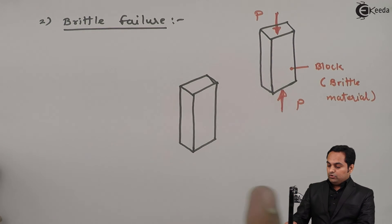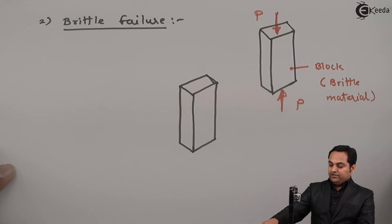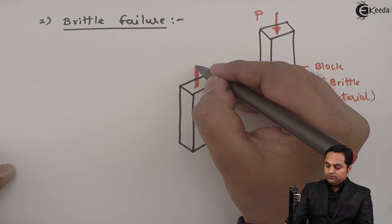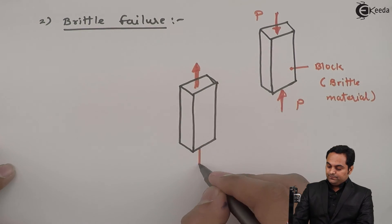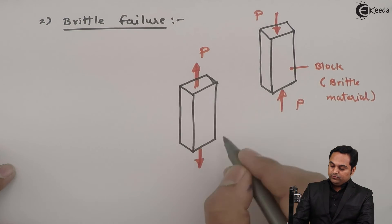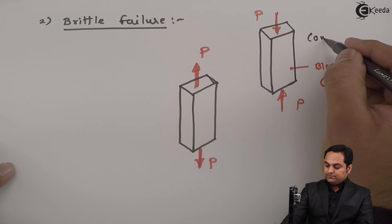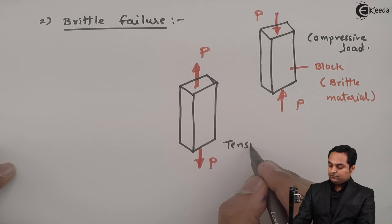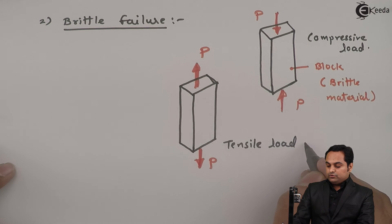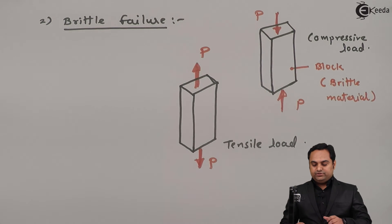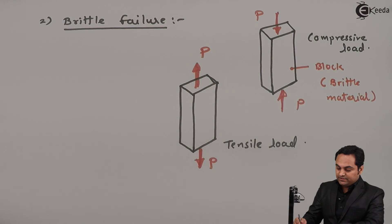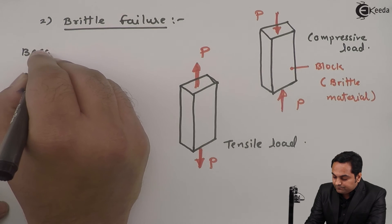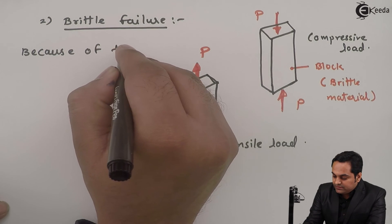On this same block, if I reverse the direction of loading - instead of compression, if we have tensile loading. Previously it was subjected to compressive load and now it is subjected to tensile load. Under the action of this tensile load, since the material is brittle, because of tensile load...